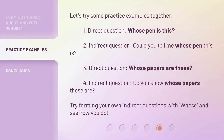Let's try some practice examples together. One — direct question: 'Whose pen is this?' Two — indirect question: 'Could you tell me whose pen this is?' Three — direct question: 'Whose papers are these?' Four — indirect question: 'Do you know whose papers these are?' Try forming your own indirect questions with 'whose' and see how you do.